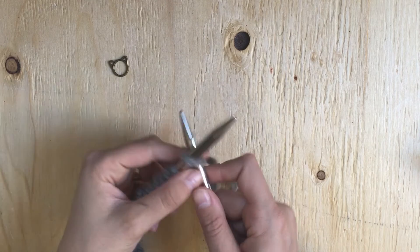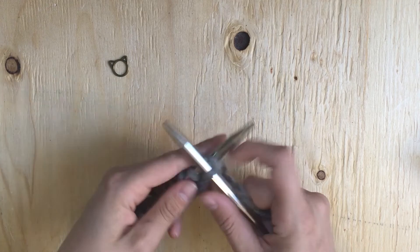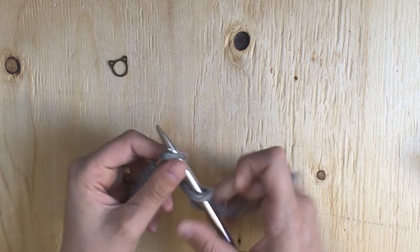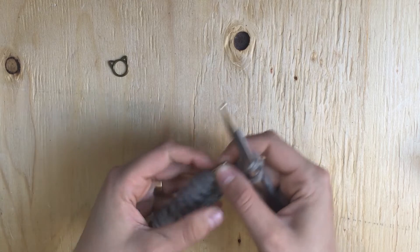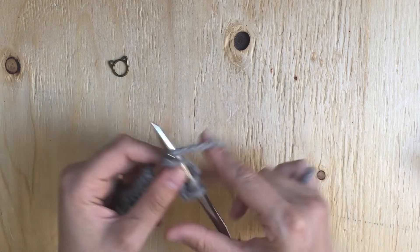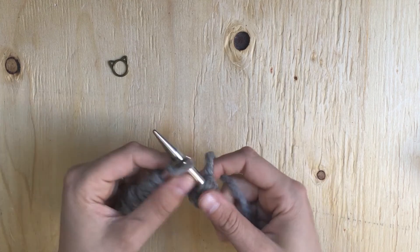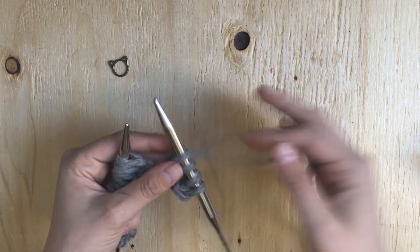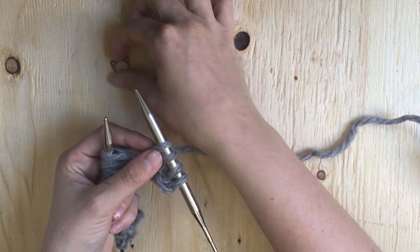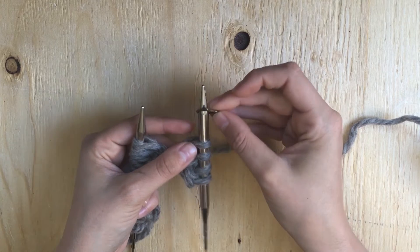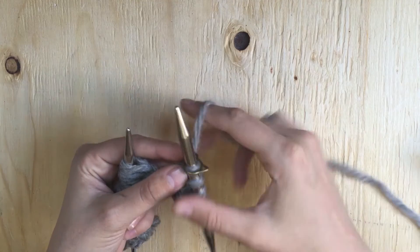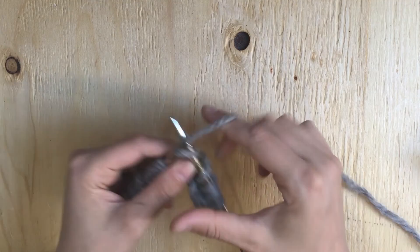So to place your marker what you're going to do is knit or just work to where it says to place your marker. So say my pattern says knit four stitches PM. So I'm going to knit four stitches and then to place the marker all you're going to do is grab it and slip it onto your right hand needle and then continue knitting.